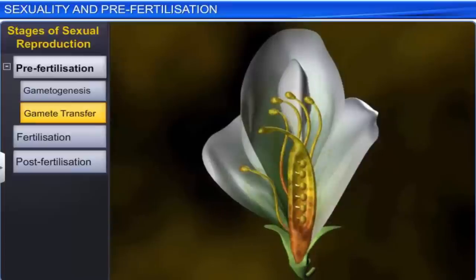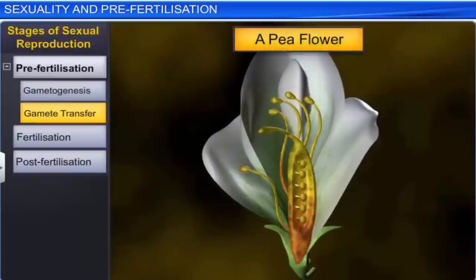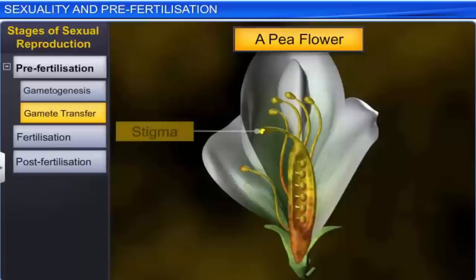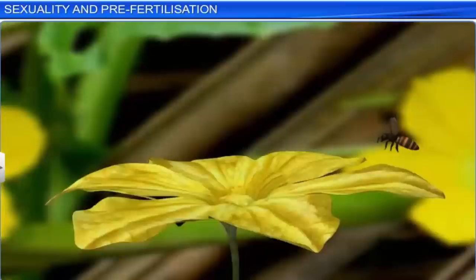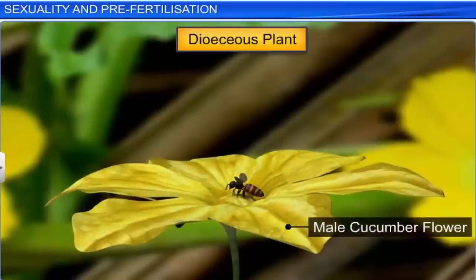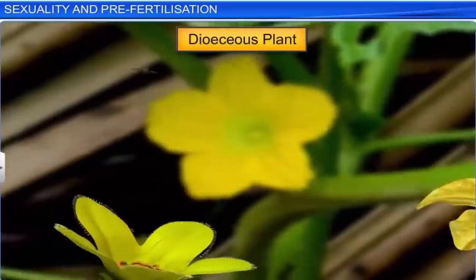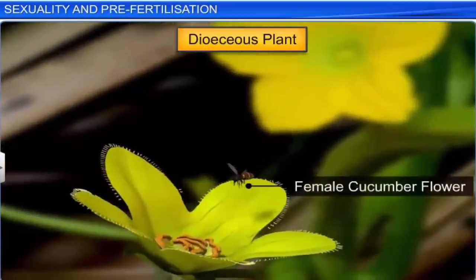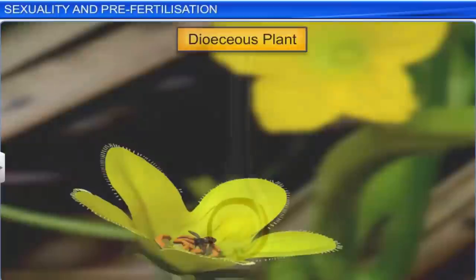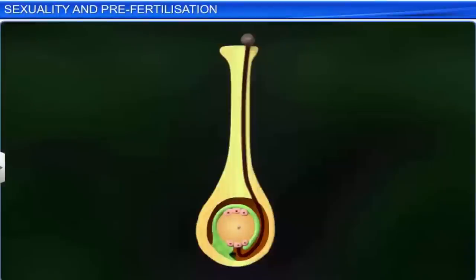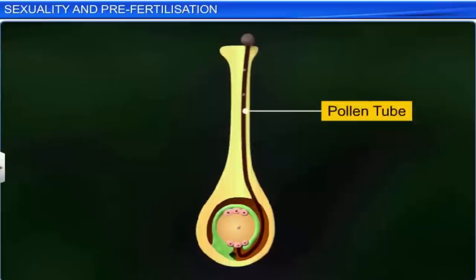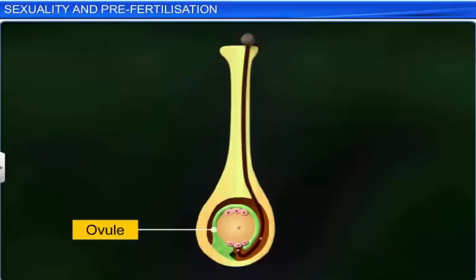In the case of monoecious plants such as the pea plant, the anther sheds the pollen grains soon after they have matured, which then fall on the stigma. In other monoecious plants, the transfer of pollen grains takes place through pollination — a process in which wind, insects, or bees deposit the pollen on the stigma. These pollen grains then germinate and produce a pollen tube that contains the male gametes. This tube penetrates the stigma and style to reach the ovule, where the male gametes are discharged.